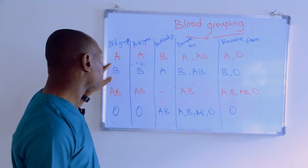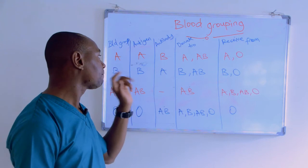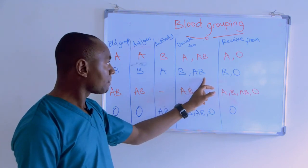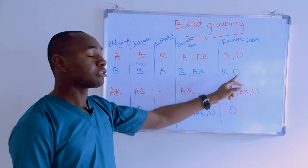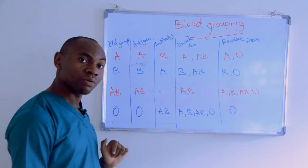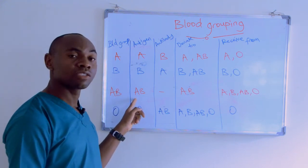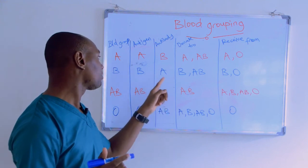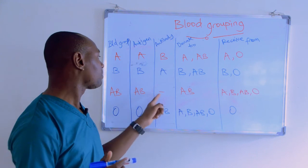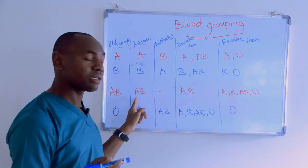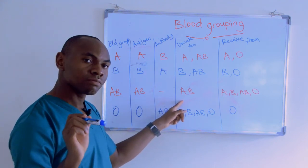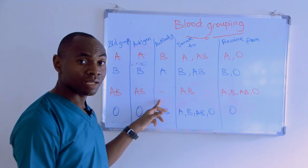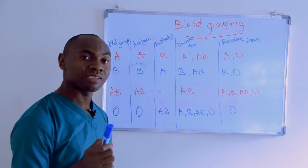For blood group B, they have antigen B and antibody A. They donate to fellow blood group B and to blood group AB, and they only receive blood from B and O. For blood group AB, they have two antigens on the red blood cells with no antibodies. If an antibody were present — an anti-A or anti-B — it would counter A and B. So they donate blood only to AB, and they receive blood from everywhere because they don't have any particular antibody — AB are termed universal recipients.